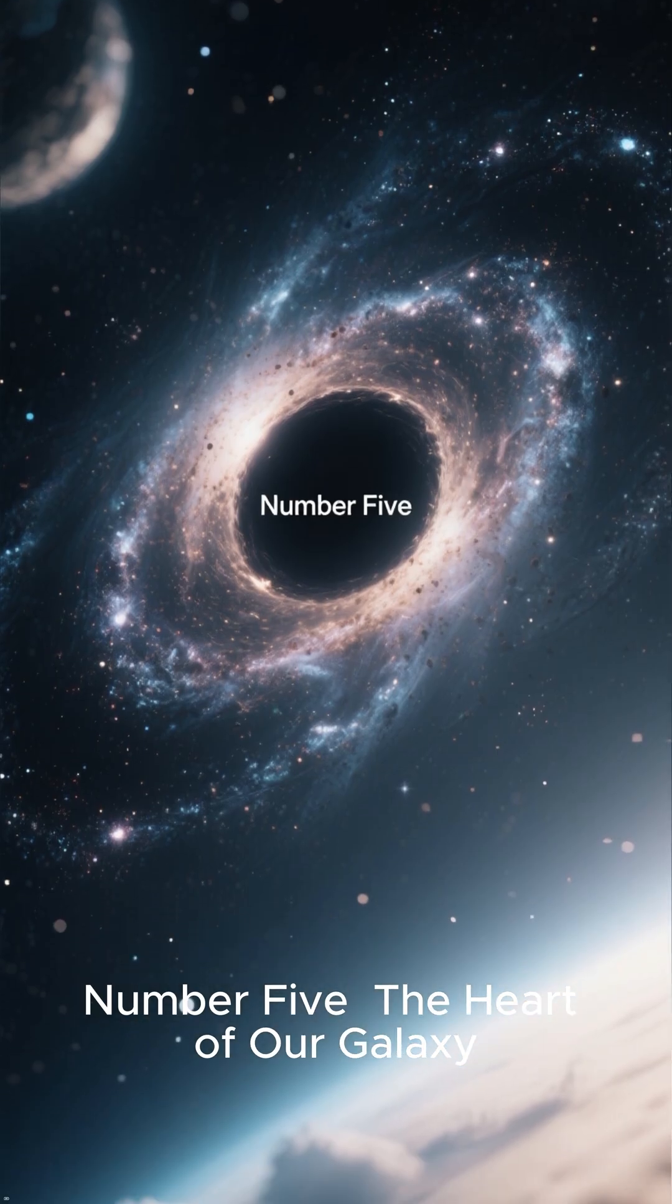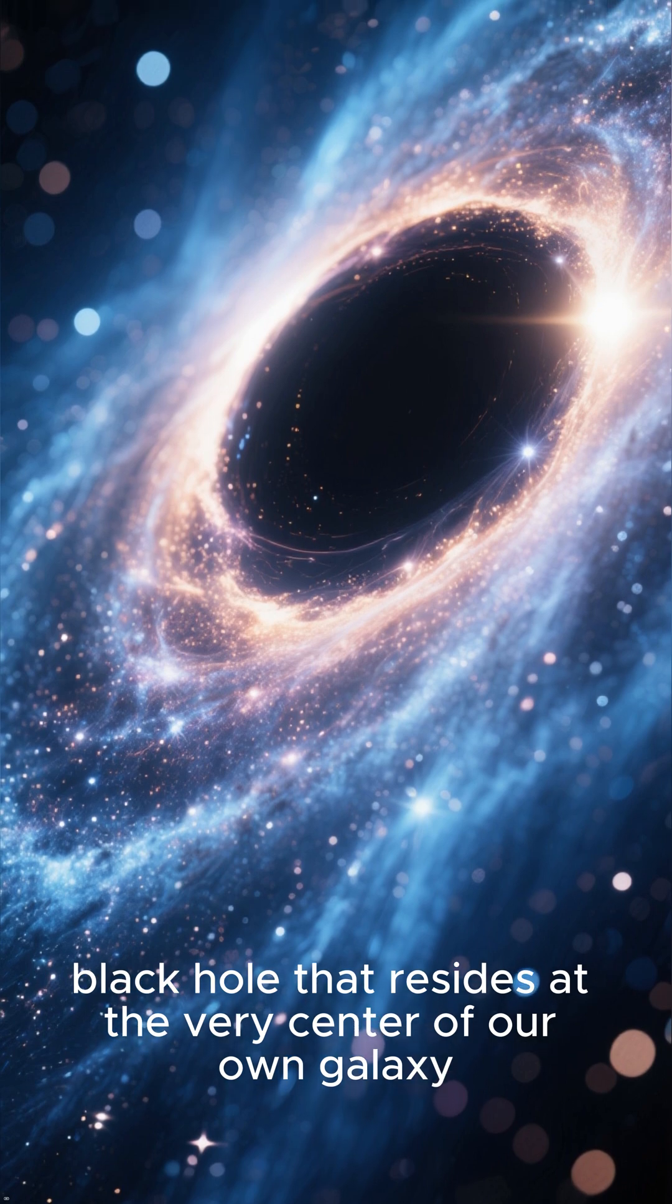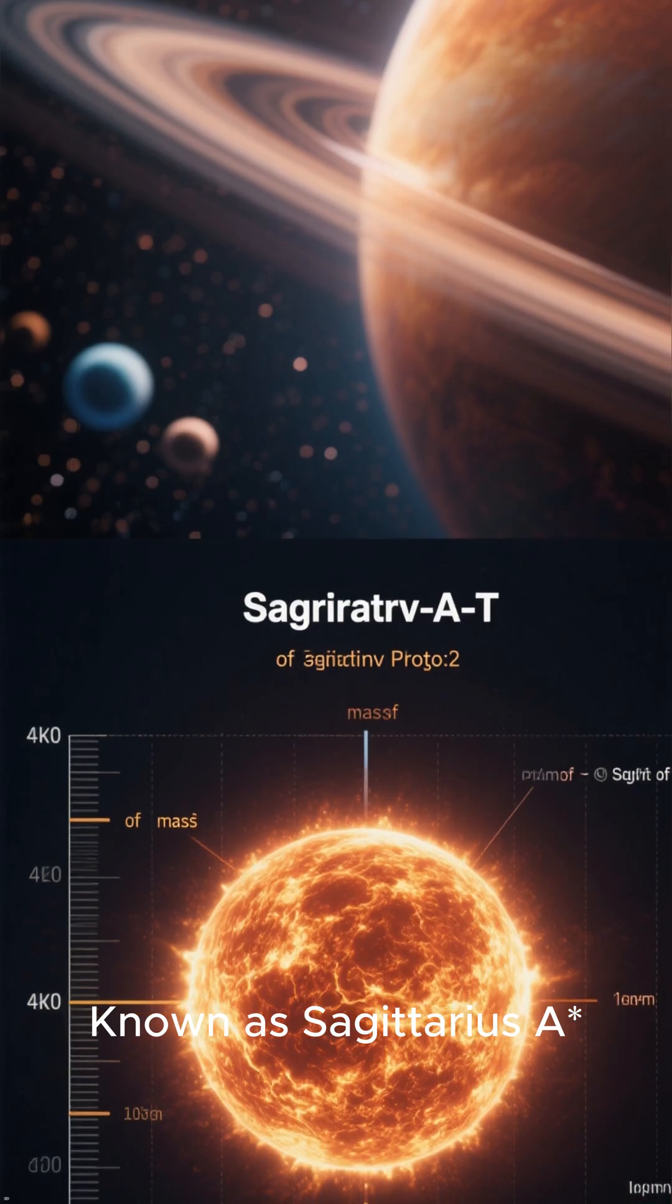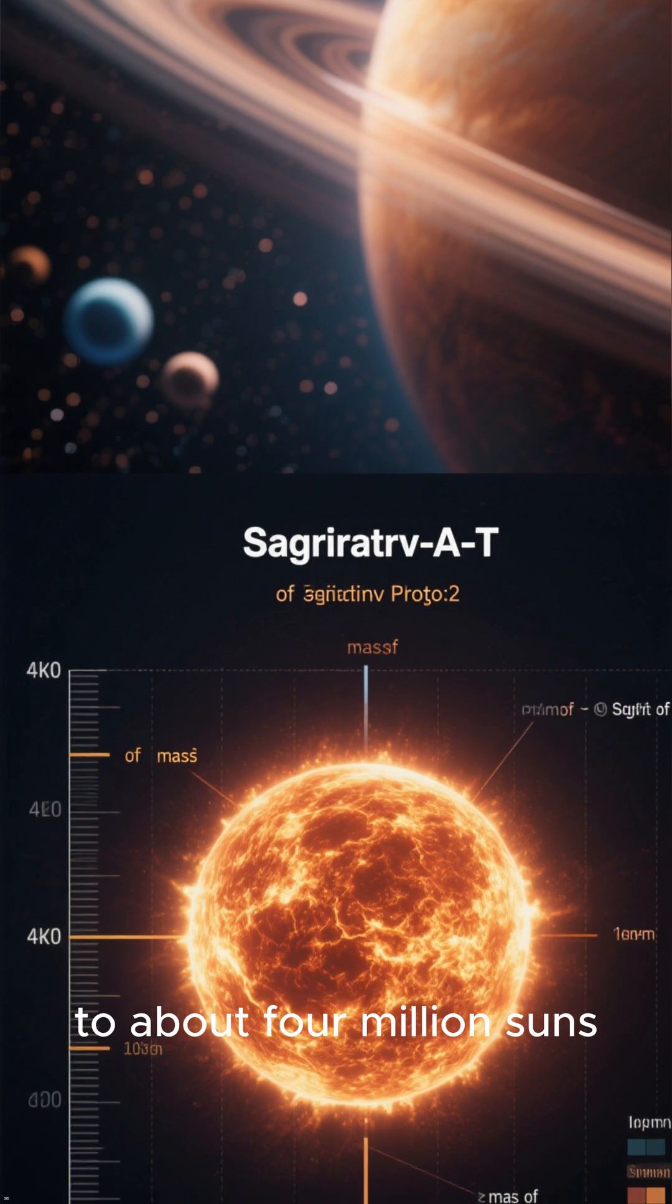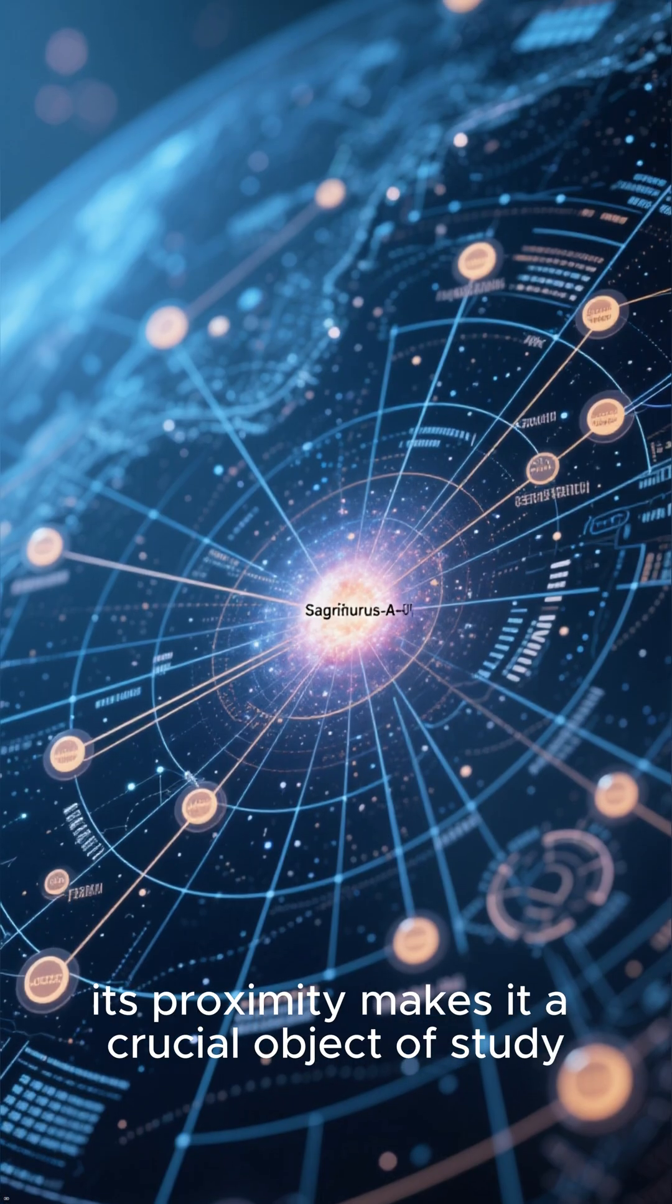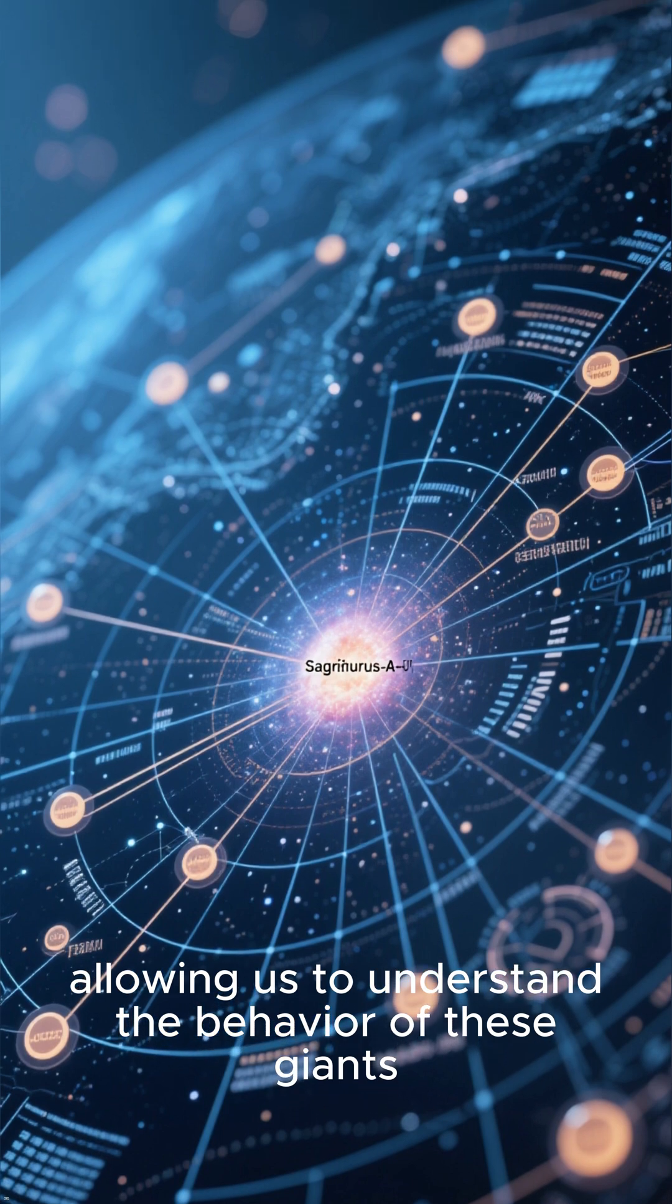Number 5: The Heart of Our Galaxy. Our list begins with a supermassive black hole that resides at the very center of our own galaxy. Known as Sagittarius A asterisk, this cosmic behemoth has a mass equivalent to about 4 million suns. While not the largest, its proximity makes it a crucial object of study, allowing us to understand the behavior of these giants.